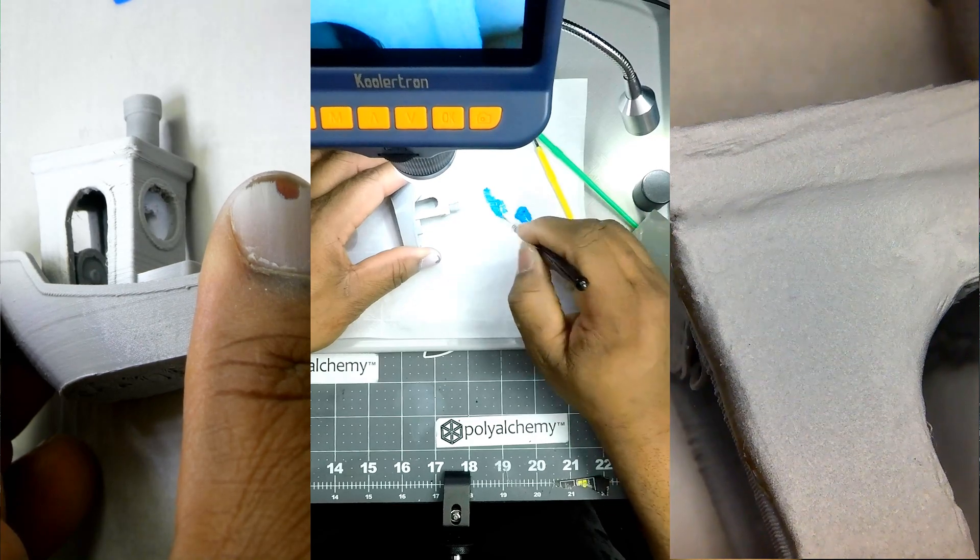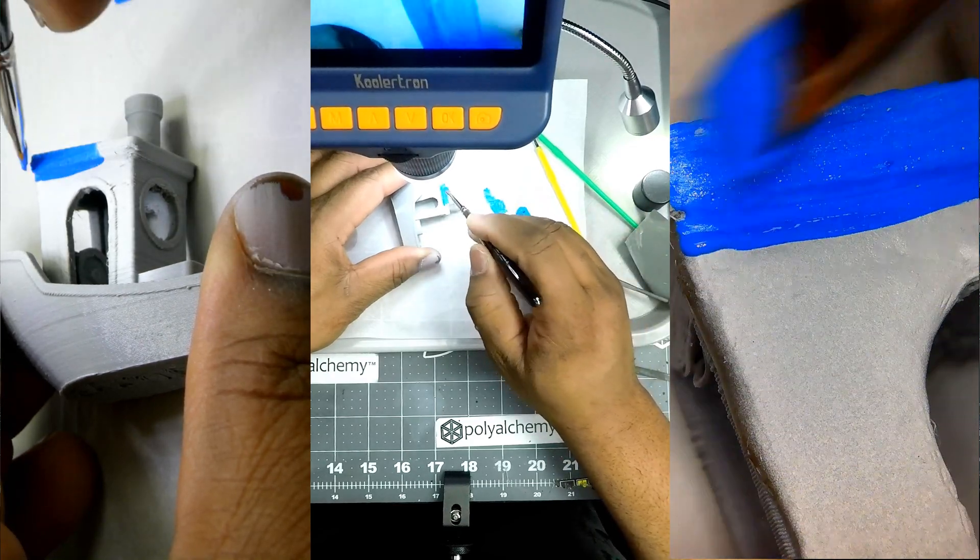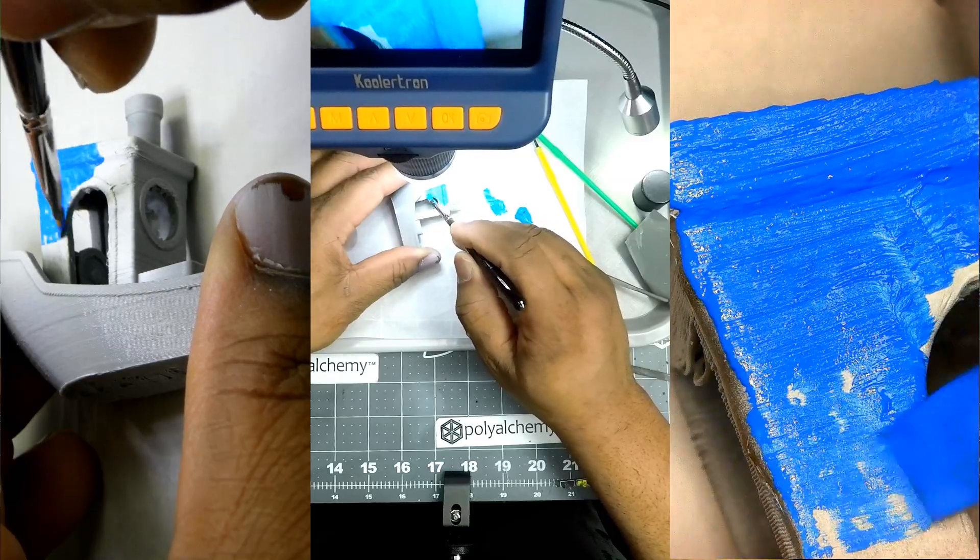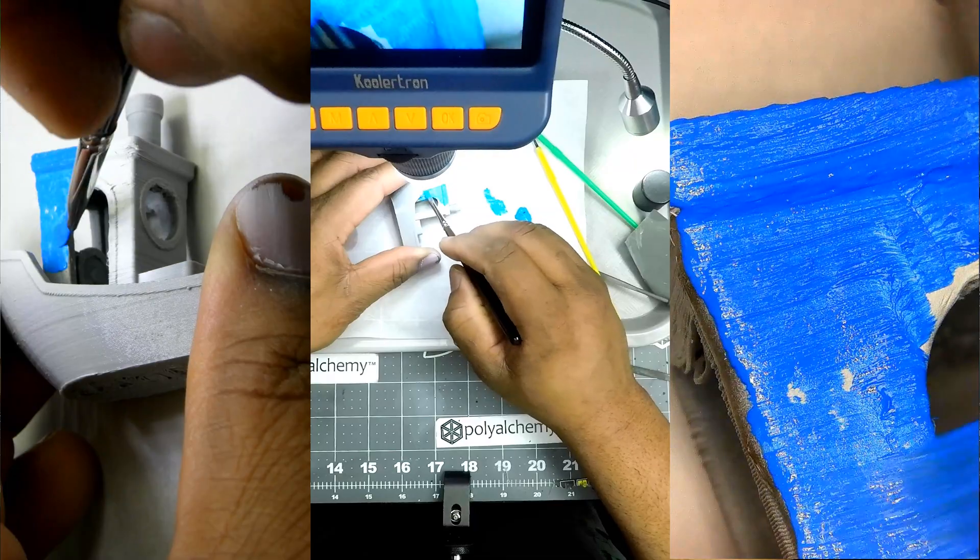And paint does the same thing. Like if you see there, if there's any areas that are missed, paint kind of helps fill in a few of those too. So it's all just a layering up and the process of layering up removes a lot of the layer lines for me.